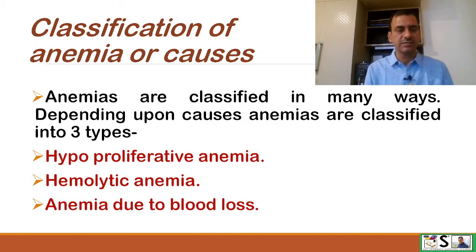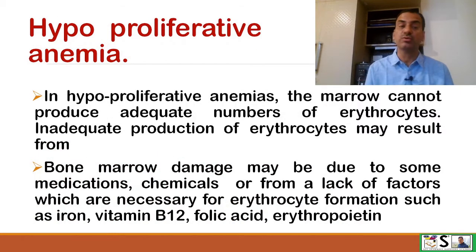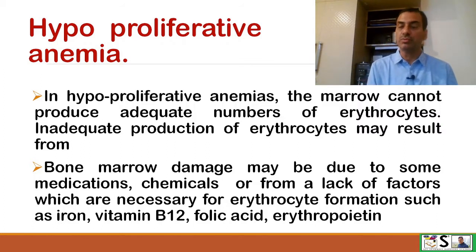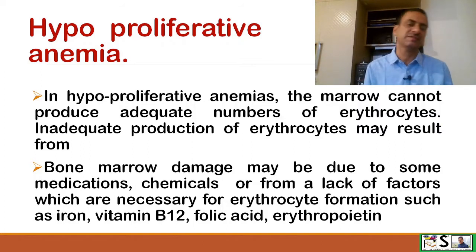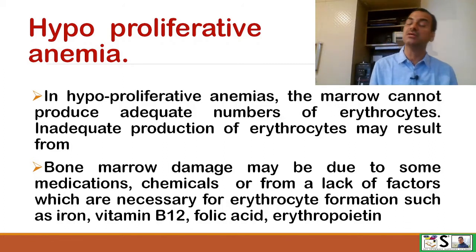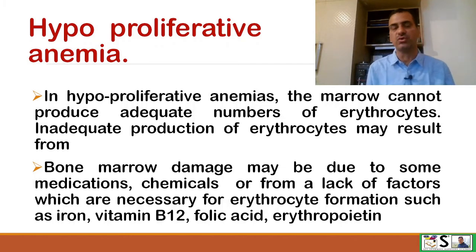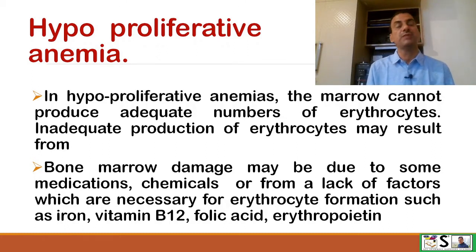Now we will discuss them one by one. First is hypoproliferative anemia. In hypoproliferative anemias, the bone marrow cannot produce an adequate number of erythrocytes or RBCs. Inadequate production of erythrocytes may result from many problems, such as bone marrow damage due to some medications or chemicals, or from lack of factors essential for erythrocyte synthesis, such as iron, vitamin B12, folic acid, and erythropoietin.